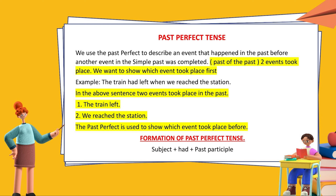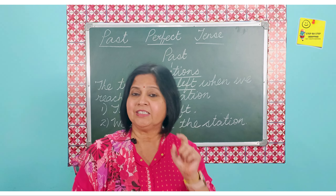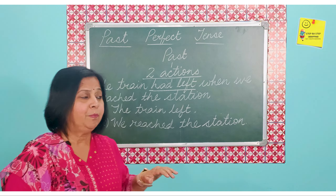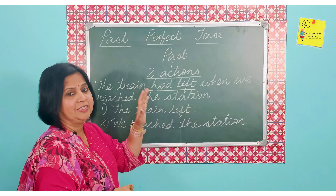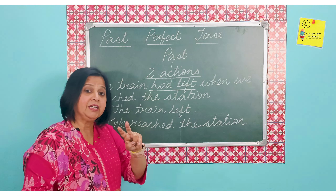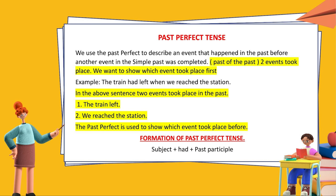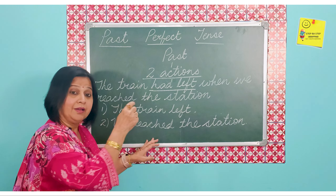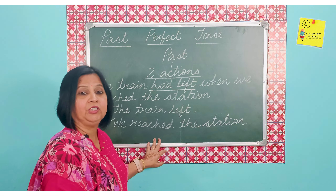Two actions took place in the past. Let us look at a sentence in the past perfect tense. For example: 'The train had left when we reached the station.' This sentence has got two actions, both took place in the past. One is 'the train left' and the other is 'we reached the station.' Among these two, one action took place before the other.